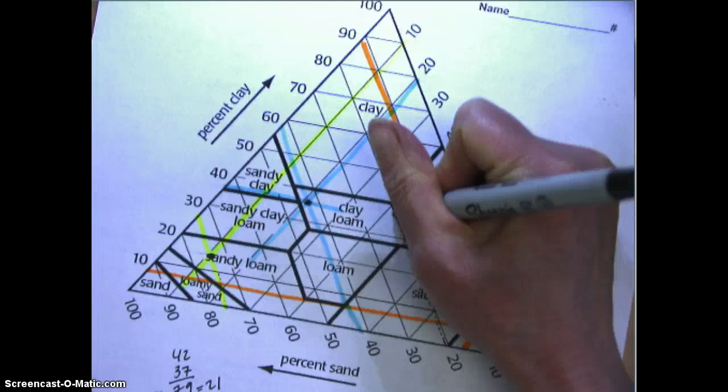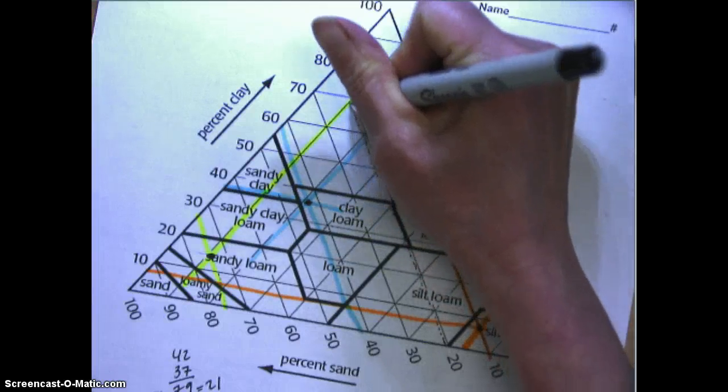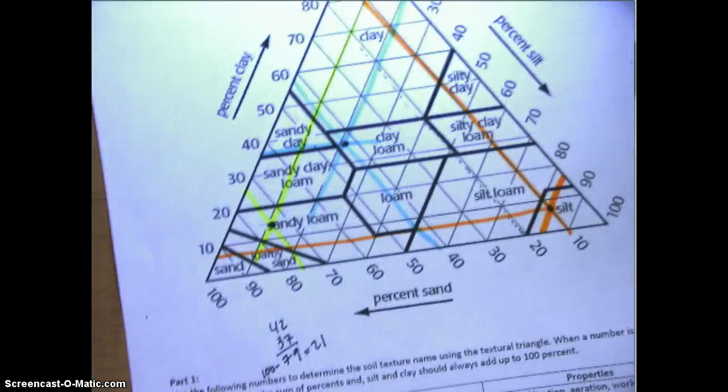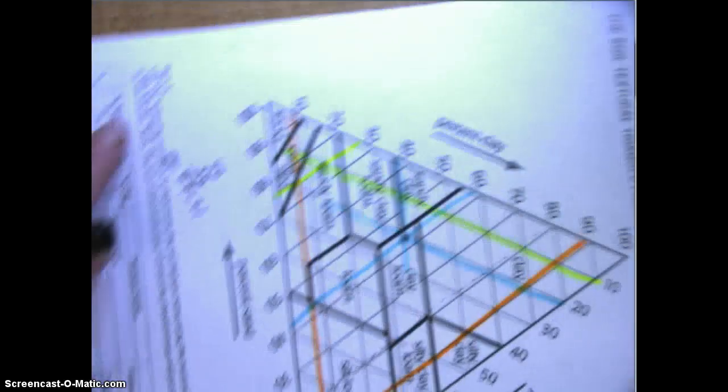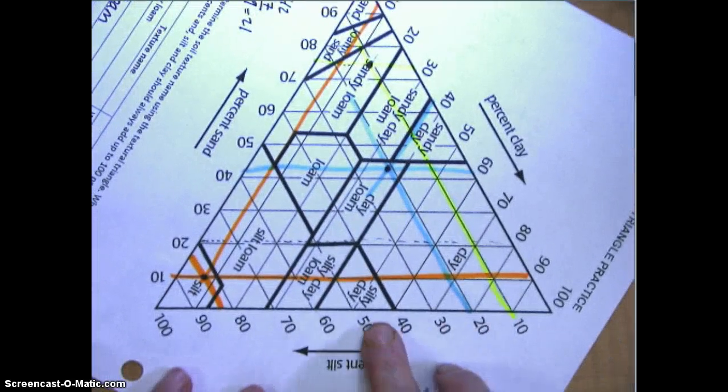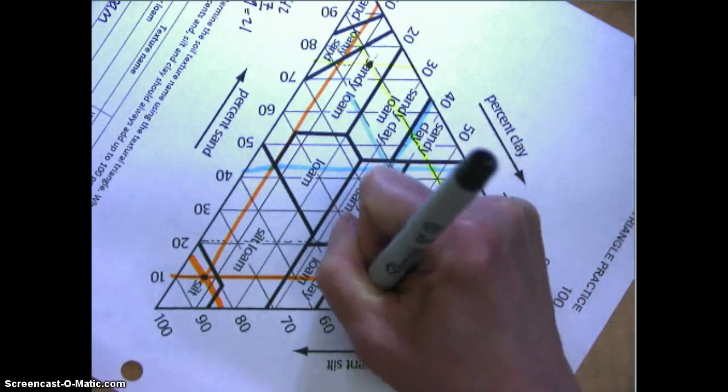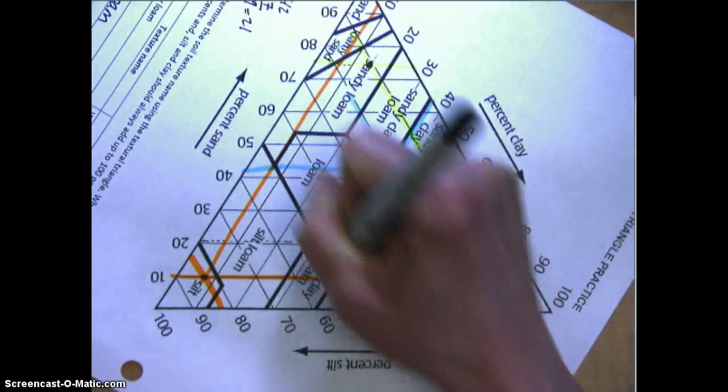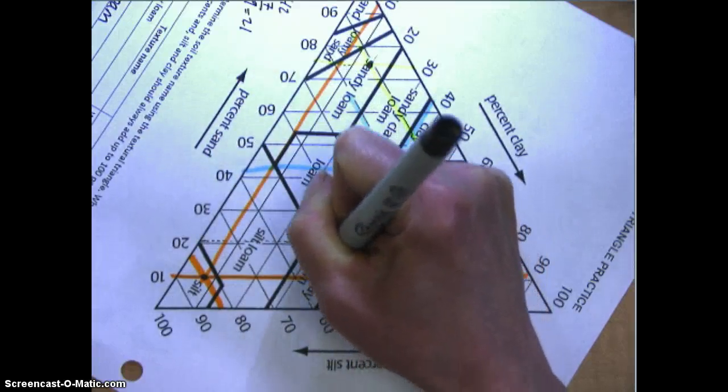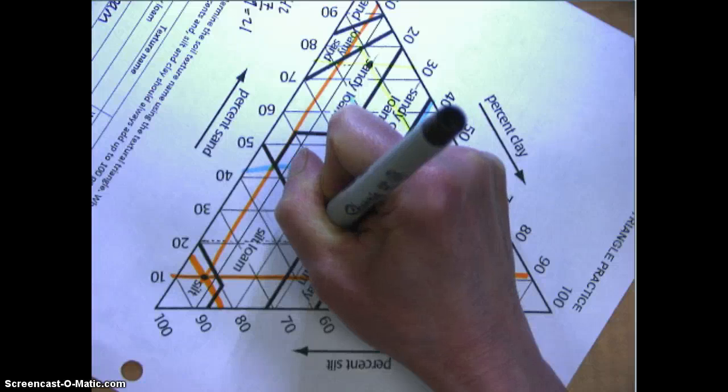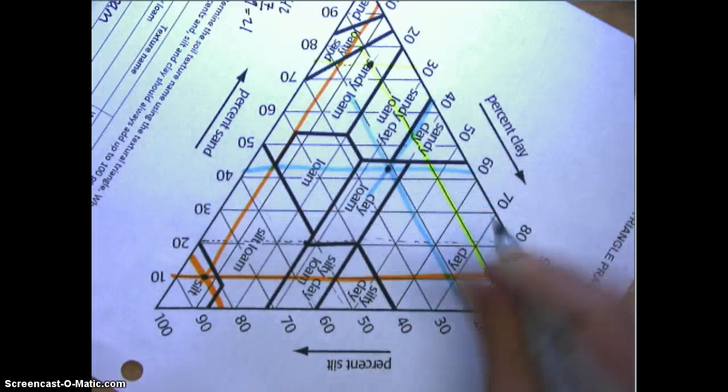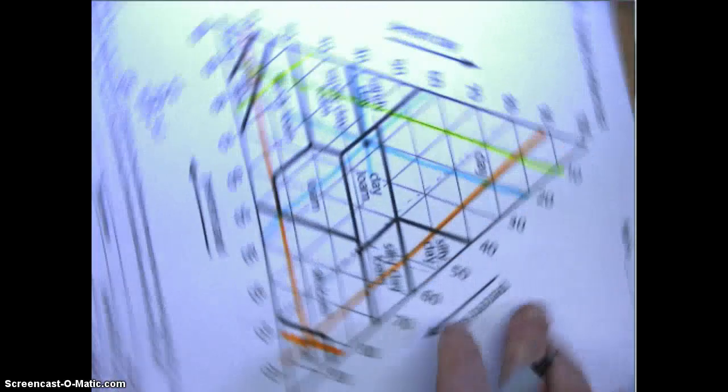How much silt? 52% silt. So I'm going to turn to the silt side and have that right in front of me. Here's 50, here's 60, so 52 is going to be again on the left, between this line and this line. 52 might be somewhere kind of on that line.